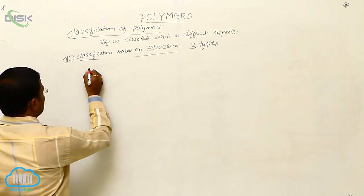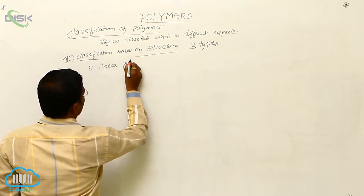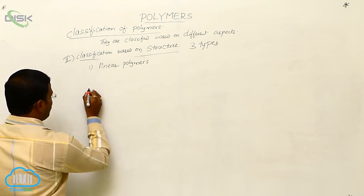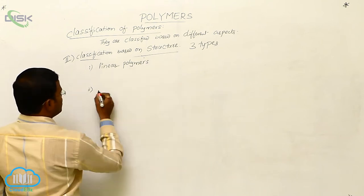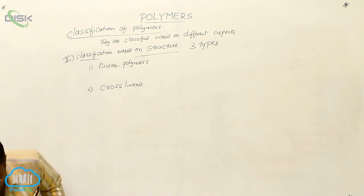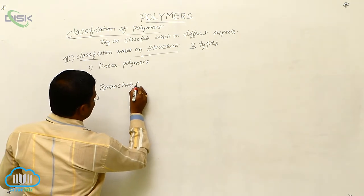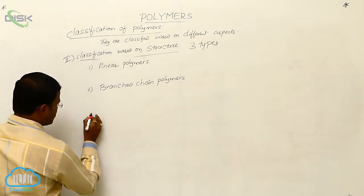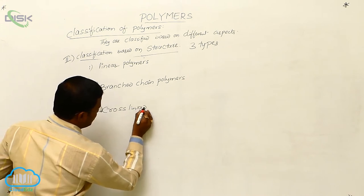The three types of polymers based on structure are: number one, linear polymers; number two, branched chain polymers; and number three, cross-linked polymers.